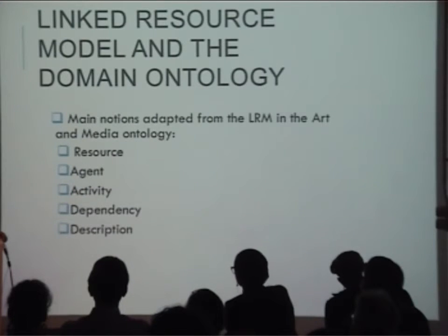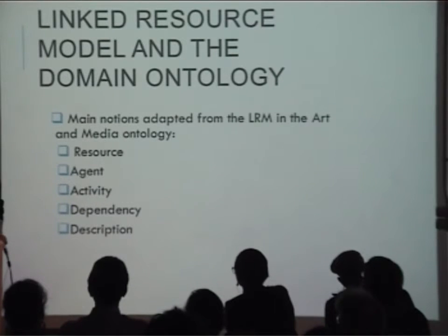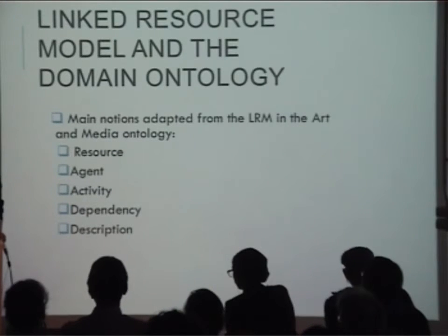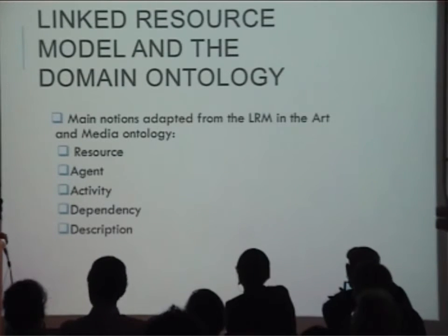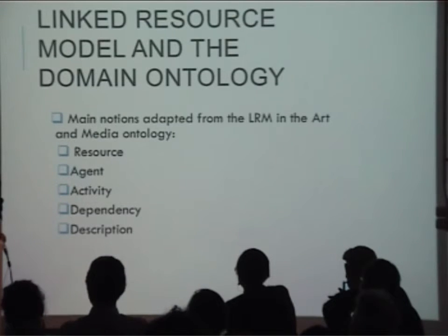The linked resource model, or LRM, approaches the environment within which digital resources are preserved as an ecosystem — importantly dynamic rather than static. It aims to describe those objects relevant to preservation within an ecosystem, and focuses on representing digital objects, their dependencies, and temporal evolution. Change over time is central to the model, recognising that not only are the digital objects themselves subject to change, but so too is the technological and social context within which they are used.